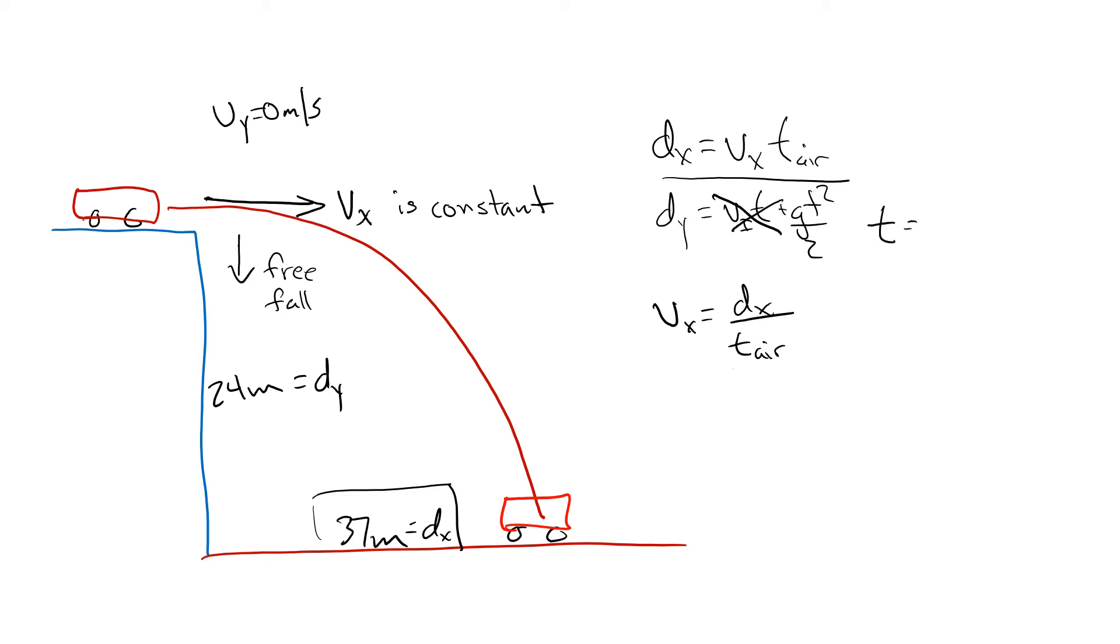So we look at our d_y equals g t squared over 2 equation and we can isolate for t. The time is going to be equal to the square root of 2 d_y over g. So time in the air because we are only falling is equal to the square root of 2 d_y divided by g. That gives us the two equations we need to solve this problem because it solves for the unknown variable in the v_x equation using the information in the y-axis.